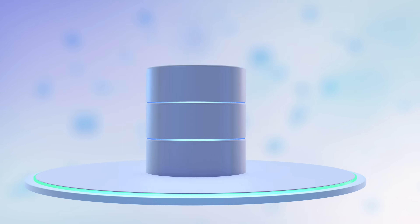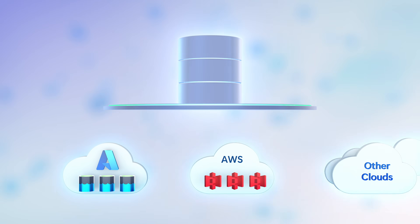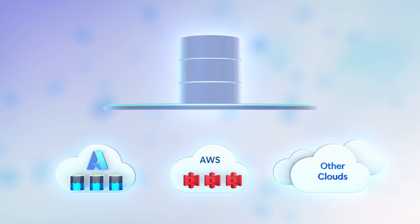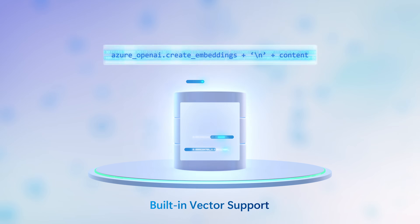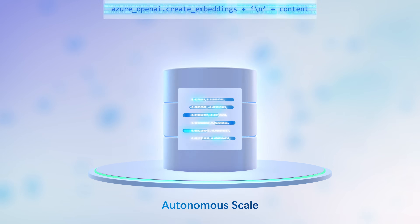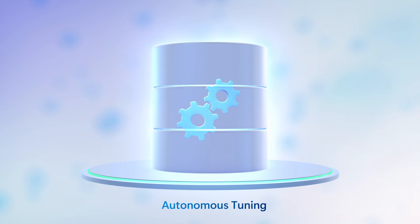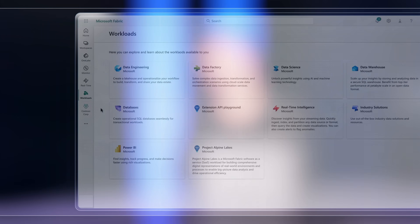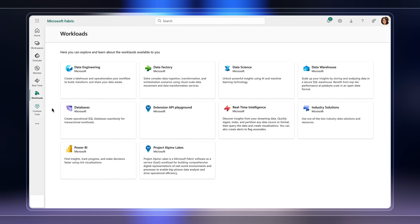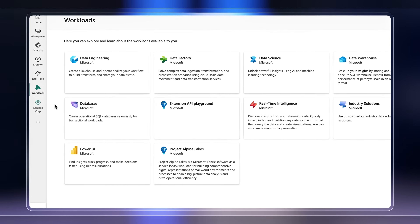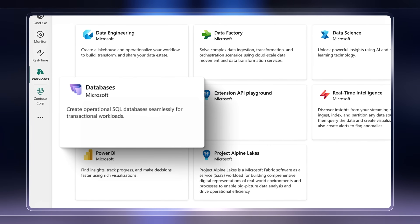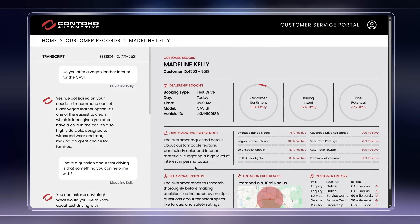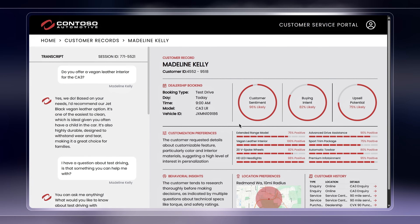What if I told you you can now spin up a SQL database in seconds that is seamlessly connected to operational and analytical data sitting across multiple clouds, has built-in vector support for search, autonomously scales and tunes itself to meet demand, and is integrated with AI for easy querying and troubleshooting? Today, we'll take a closer look at a new class of databases that's part of Microsoft's data and analytics platform, Microsoft Fabric, that does just that as you build modern AI apps.